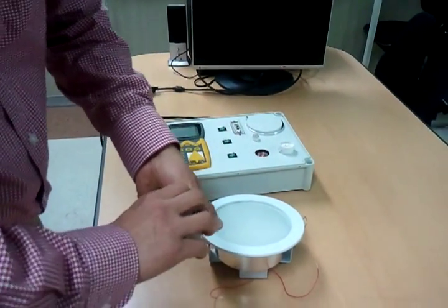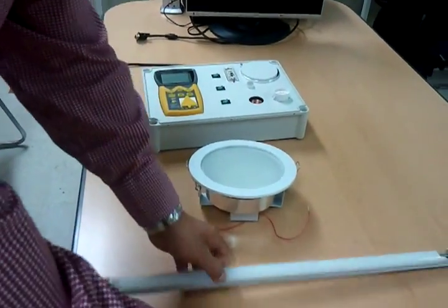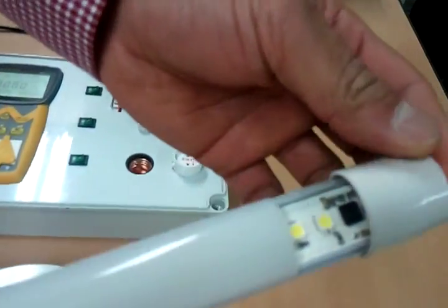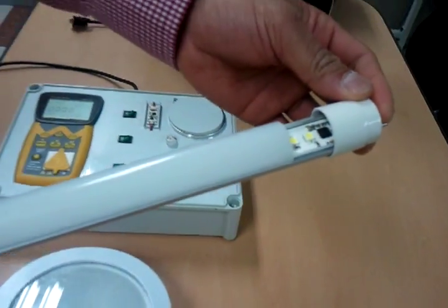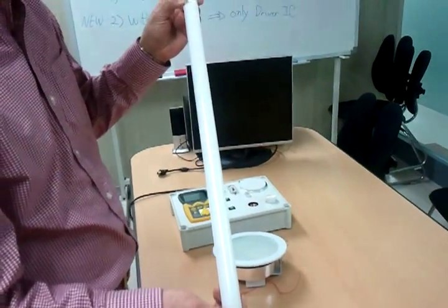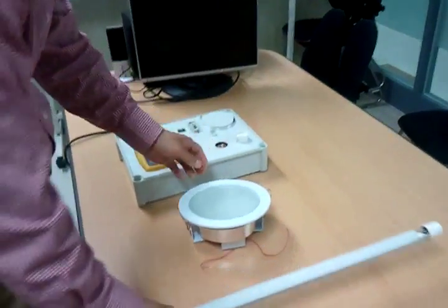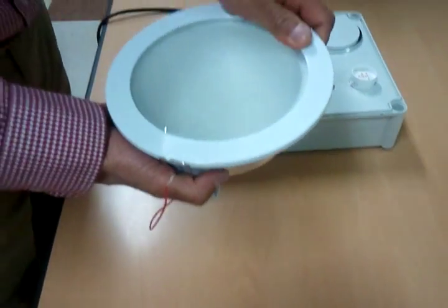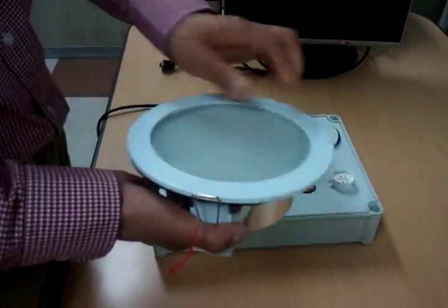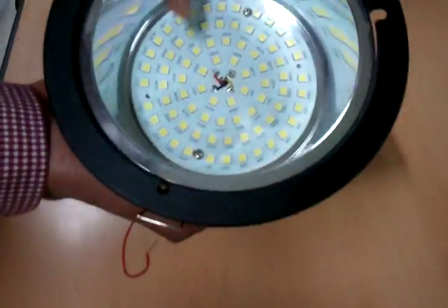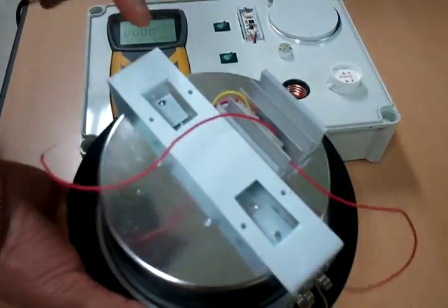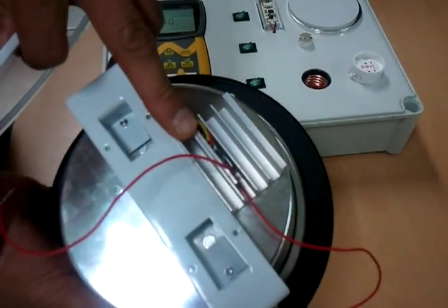The other one is the tube type — a normal tube type LED lighting. This one is the 600 millimeter size, and you can find only one driver IC without SMPS. The other one is the down lighting, which is around 12 watt. You can see the LED PCB, and the back side is without SMPS — you can use only the drive module.